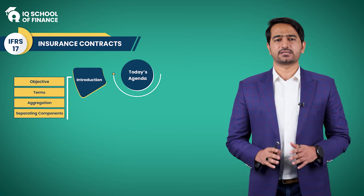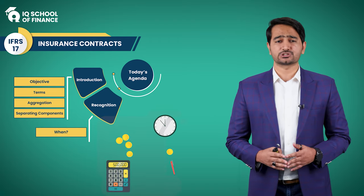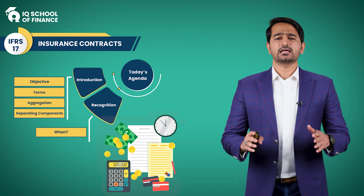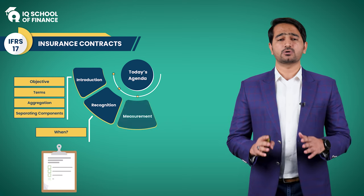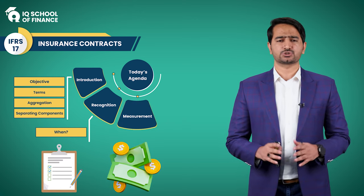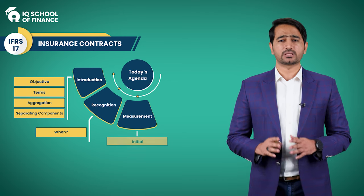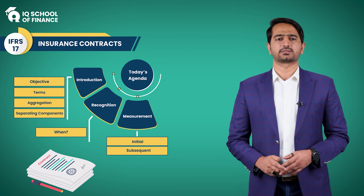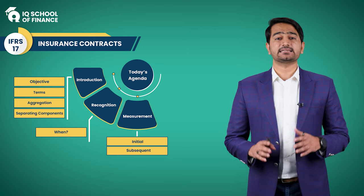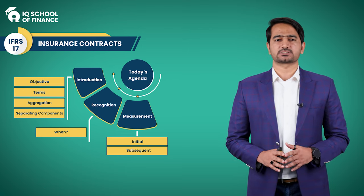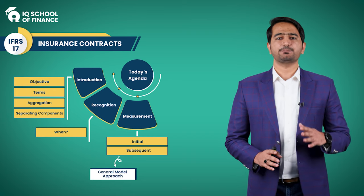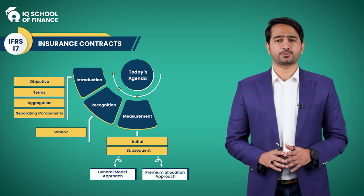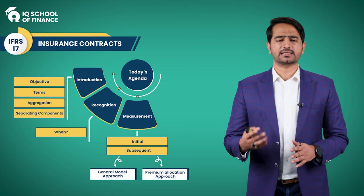IFRS 17 covers when to start accounting for an insurance contract — that's about recognition. Then we have rules for measurement, or the amount that should be recognized with respect to the insurance contract, both initially when the contract first starts and subsequently in subsequent reporting periods. IFRS 17 guides us in two major approaches: the general approach and the premium allocation approach, as well as the variable fee approach, modified general approach, and others.